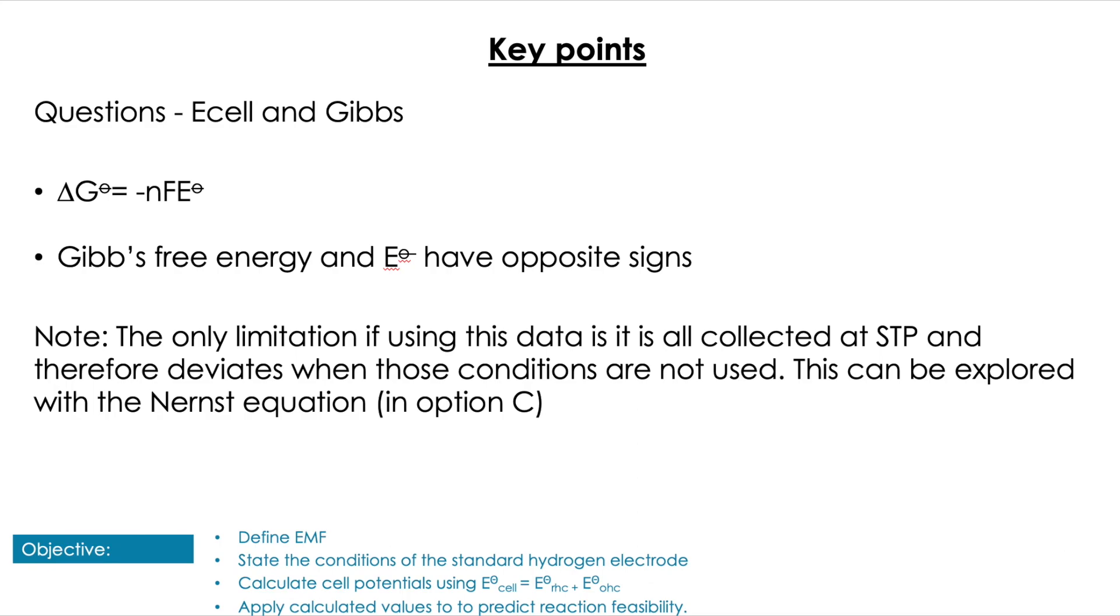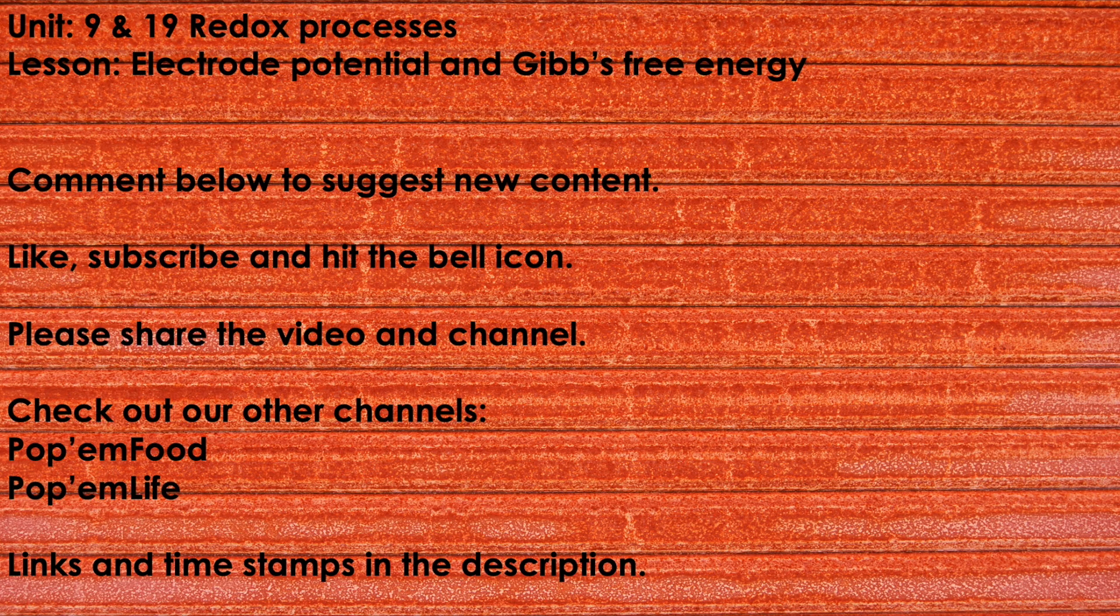Make sure you do a lot of questions on this, but it shouldn't be too difficult. We're just plugging in the values really. We're building on the knowledge we got from previously studying Gibbs free energy, so you might want to go back and have a look at that if you're finding it a little bit difficult. Just really remember that relationship between Gibbs and E°cell values. There are some limitations to this data because it's all collected at STP, so where we see deviations from that, we can see deviations from these values. There are ways we can look at that using the Nernst equation - that's in Option C. Thanks for joining me again, guys. Please make sure you like, subscribe, share the video, and check out our other channels. Remember: practice makes slightly better.